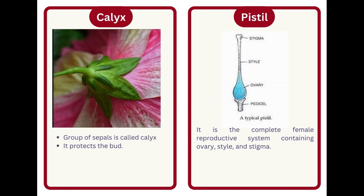Calyx. A group of sepals is called the calyx. It protects the bud. Pistil. It is the complete female reproductive system containing the ovary, style, and stigma.